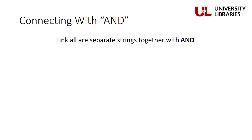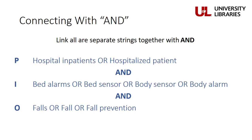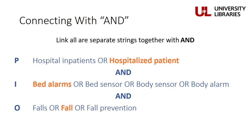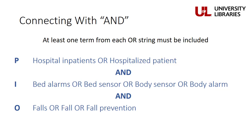Next, we use AND to link our separate search strings together. This limits our search by saying we need at least one term from each of our OR strings returned in our results. So I would be happy with results that included hospital inpatients AND bed sensors AND fall prevention, or articles with hospitalized patient AND bed alarms AND falls — really any combination of these words as long as at least one term from each OR string is included. Now that we know how to combine our terms together, we're ready to begin searching research databases like PubMed and CINAHL. We will cover this in our next and final video.